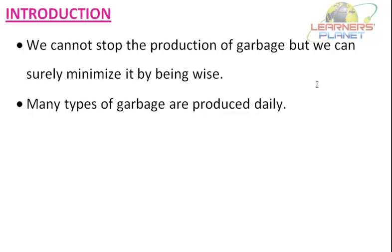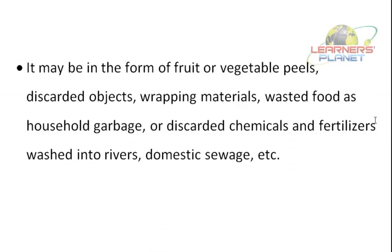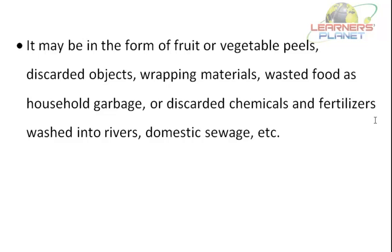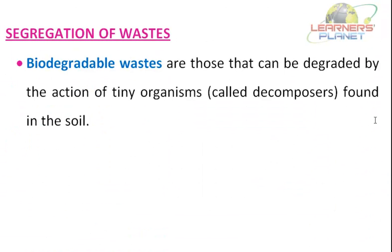Based on the ability of the wastes to rot away, they are of two types. So let us learn about them — the segregation of wastes. Students, there are mainly two types of wastes: biodegradable wastes and non-biodegradable wastes. First of all, we should get familiar with one term that is related to these wastes, and that is degradation.